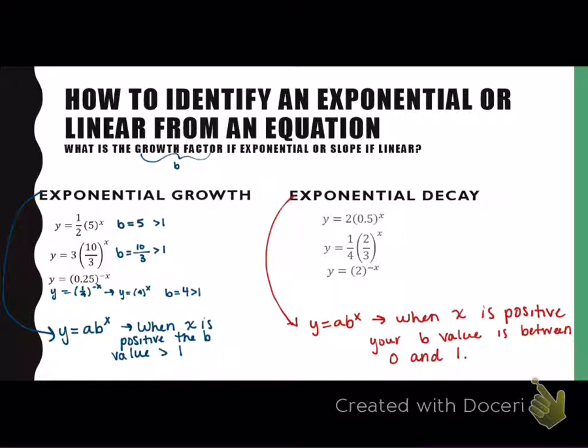So, Spencer, what's my B value in Y equals 2 times 0.5 to the X? Yeah, and is that between 0 and 1? Yes, it is. It is between 0 and 1. Vivian, what's my B value in the next one? And is that between 0 and 1? Yes, it is. 0 is less than 2 thirds, and 2 thirds is less than 1. What is my B value? Who can tell me my B value in the last one? Jenny? It's actually 1 half. Because remember, we have to change the X value to a positive, which is a reciprocal. So, that is between 0 and 1.